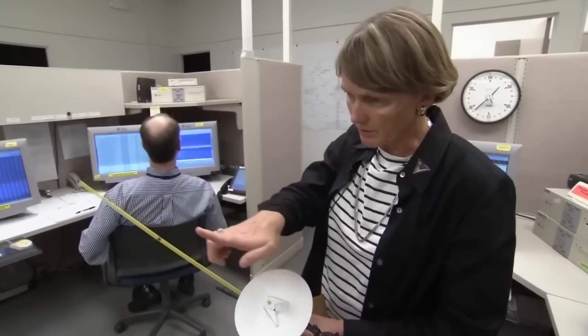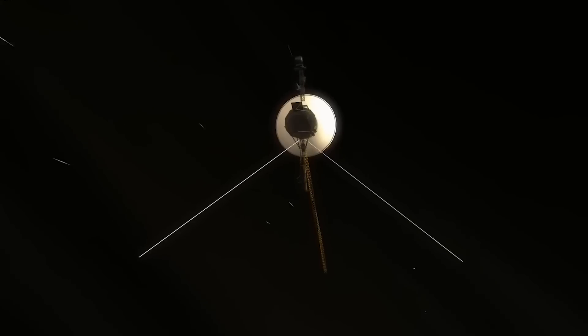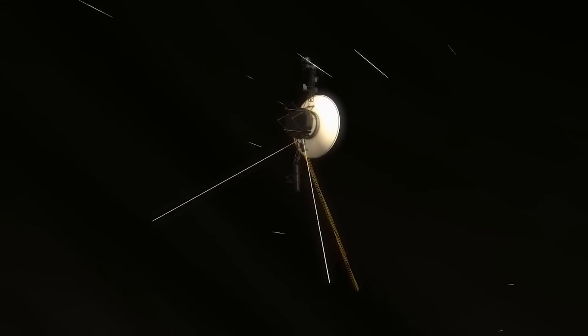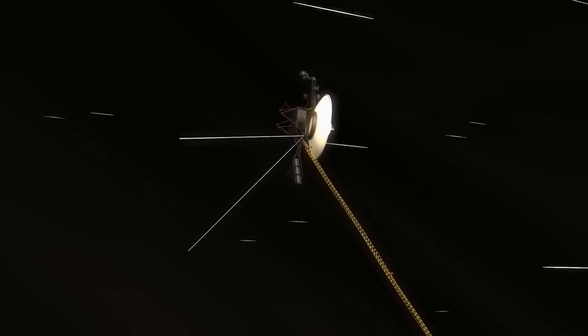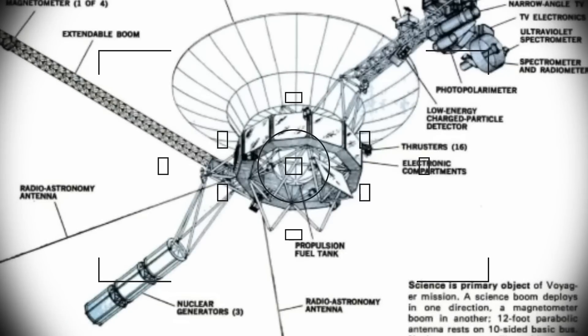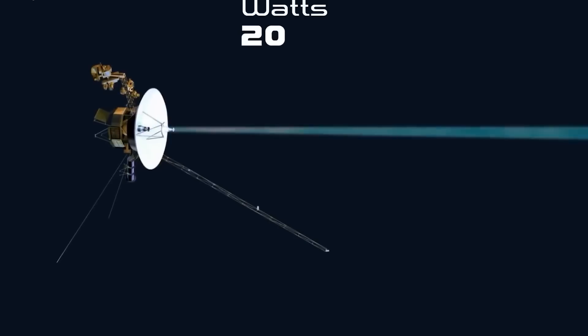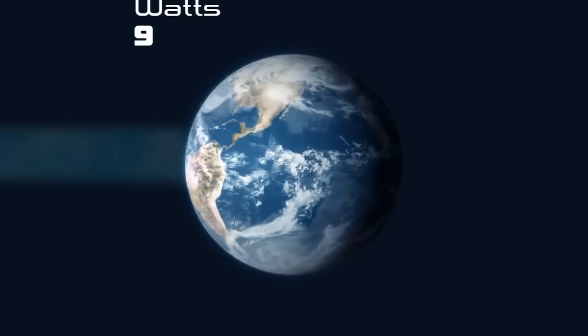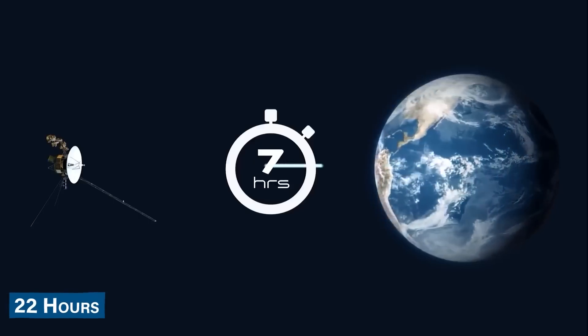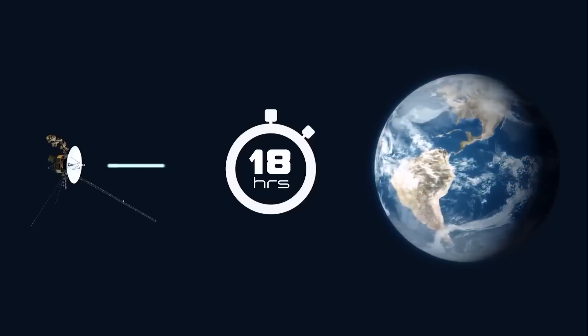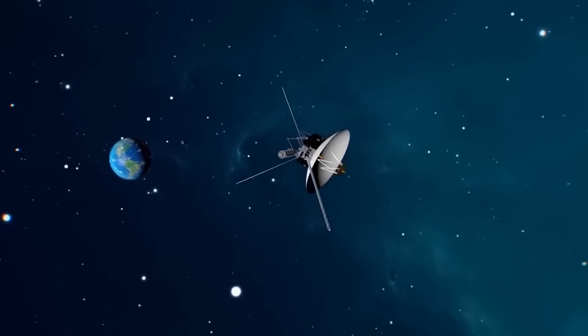Armed with this newfound knowledge, NASA engineers swiftly devise a solution. They send a command to Voyager 1, instructing the AACS system to switch to the correct computer for transmitting telemetry data. This low-risk fix requires immense patience due to the vast distance between Earth and the spacecraft. Radio signals take nearly 22 hours to travel back and forth, demanding precise coordination and strategic troubleshooting.